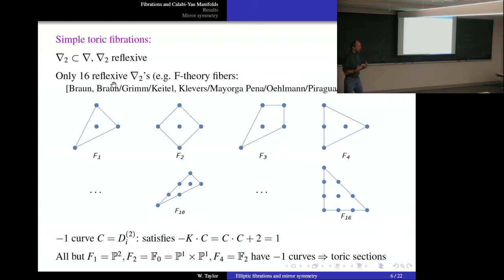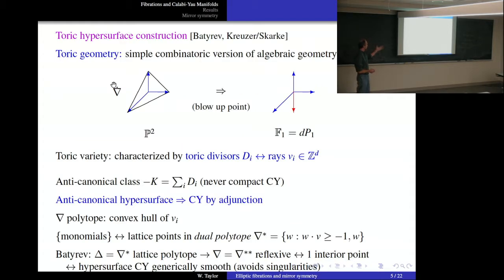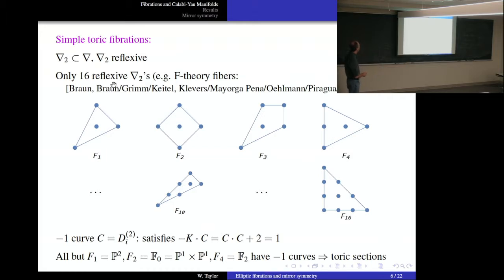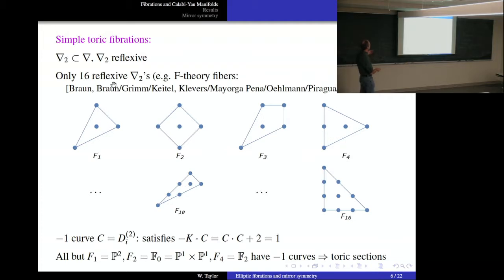There are situations where when we have a Calabi-Yau threefold realized as a toric hypersurface, we can immediately see it is elliptically fibered. This occurs when there is a two-dimensional reflexive polytope which is a sub-polytope of the four-dimensional reflexive polytope, passing through the origin. There is a short list of reflexive 2D polytopes. These have been used in the F-theory context by Volker Braun, Braun-Grimm-Paitelm and others including Paul, looking at the fibration structure. There are 16 of these.